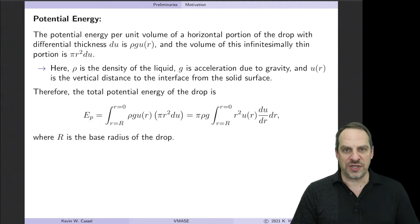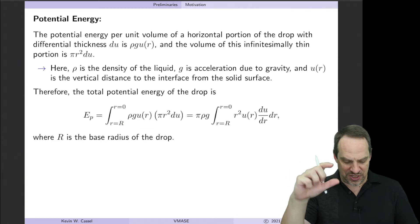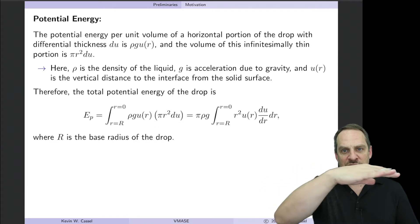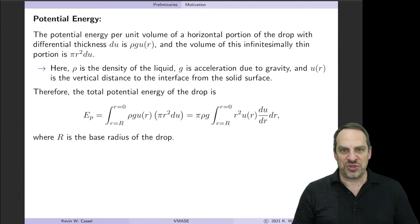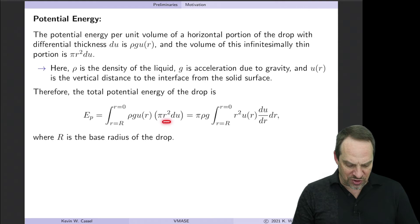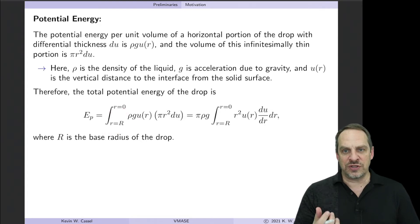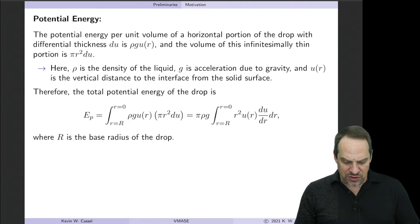We also have the volume of this little infinitesimally thin disc-shaped segment, which is pi·r²·DU — pi·r² is the area of the circle, and DU is the little differential height. So we can form the total potential energy E_P. That's rho·G·U times pi·r²·DU for each little horizontal slice. The sum of all those slivers gives us the total potential energy. Rho, G, and pi are constants, taken outside the integral, leaving r², U, and DU. Since R is the independent variable, we rewrite DU as (DU/DR)·DR, so the total potential energy is written as an integral over R.